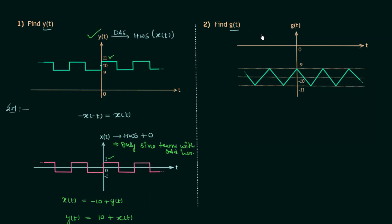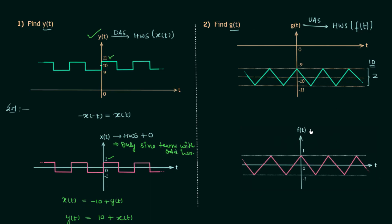In the second example the given signal is gt. In this case we can obtain the half wave symmetric signal after performing the upward amplitude shifting. Let the half wave symmetric signal be represented by ft. We shift the waveform upward by 10 units because the total height of the signal is 2 units and 10 is in the center, so 10 must move to 0. Signal ft is an even signal — if you perform the time reversal you will get the same signal.